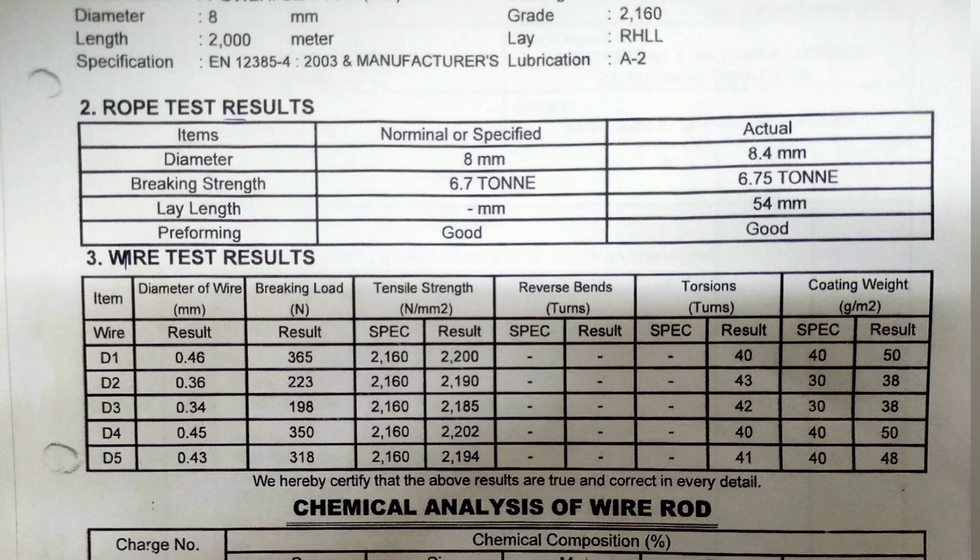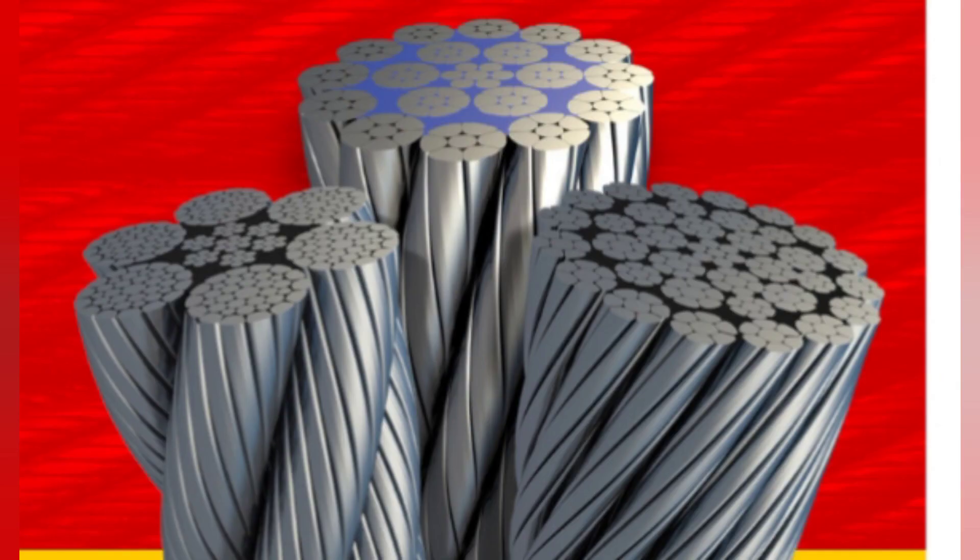On a preformed wire rope, the strands and wires are formed during the manufacturing process to the helical shape they will take in a finished wire rope. Preformed rope can be advantageous in certain applications where it needs to spool more uniformly on a drum, needs greater flexibility, or requires more fatigue resistance when bending.